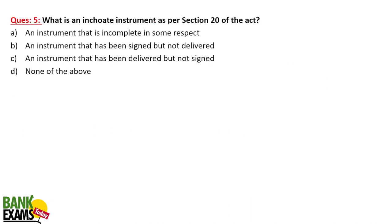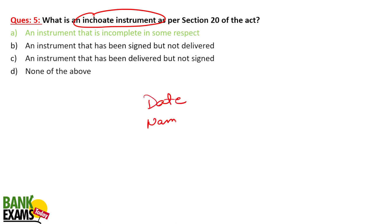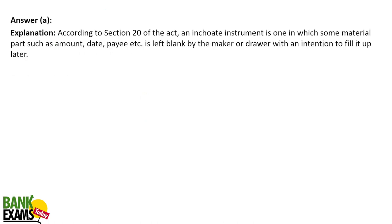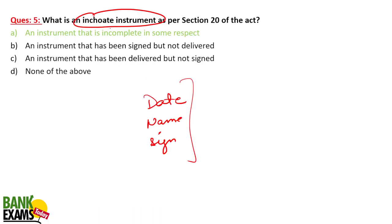What is an inchoate instrument? That is important — inchoate means it is incomplete. The date is not mentioned, maybe the name is not mentioned, maybe the signature is not there — some important details are missing. An inchoate instrument is one in which material parts such as amount, date, and payee are left blank by the maker or drawer with an intention to fill them in later. That is an inchoate instrument according to Section 20.